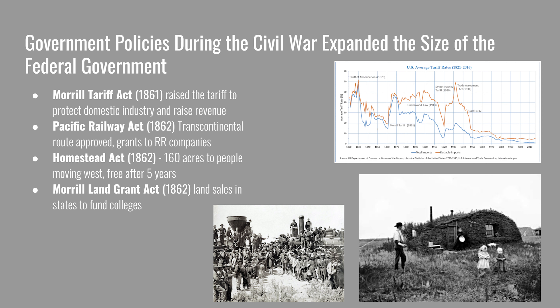The last group of government policies includes the Morrill Tariff Act, passed to raise revenue and protect domestic industries — before which the average tariff rate had been declining since the Tariff of Abominations. The Pacific Railway Act approved the transcontinental railroad route to California; because it was passed during the Civil War, it used a northern route, with a southern route to be constructed later during Reconstruction. The Homestead Act of 1862 gave 160 acres to people moving west and willing to settle the land — if settlers improved the land and stayed for five years, it was theirs to keep. The Morrill Land Grant Act encouraged states to put profits from land sales into a fund to build colleges specializing in agriculture and engineering.